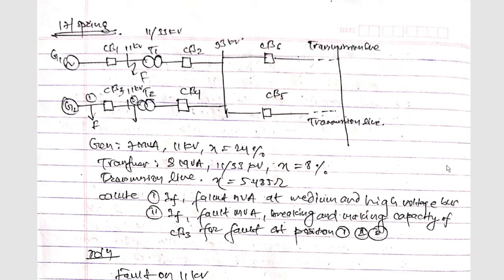Hello and welcome to my channel. Today I am back with another important numerical on power plant designs. Here you can see a single line diagram. The generator is rated 7 MVA, 11 kV with x = 24%. The transformer is rated 8 MVA, 11/33 kV with x = 8%. The transmission line x = 5.485 ohm. We need to calculate fault MVA at medium and high voltage bus, and the fault MVA breaking and making capacity of circuit breakers for fault at positions one and two.